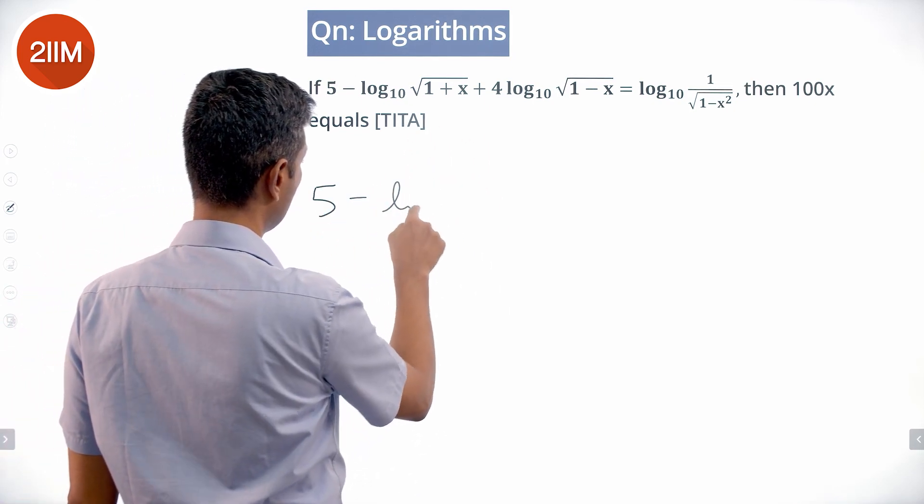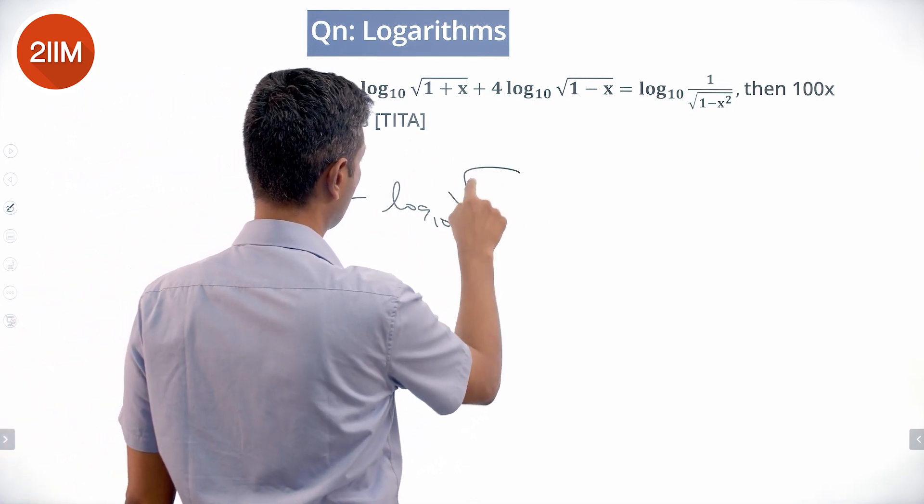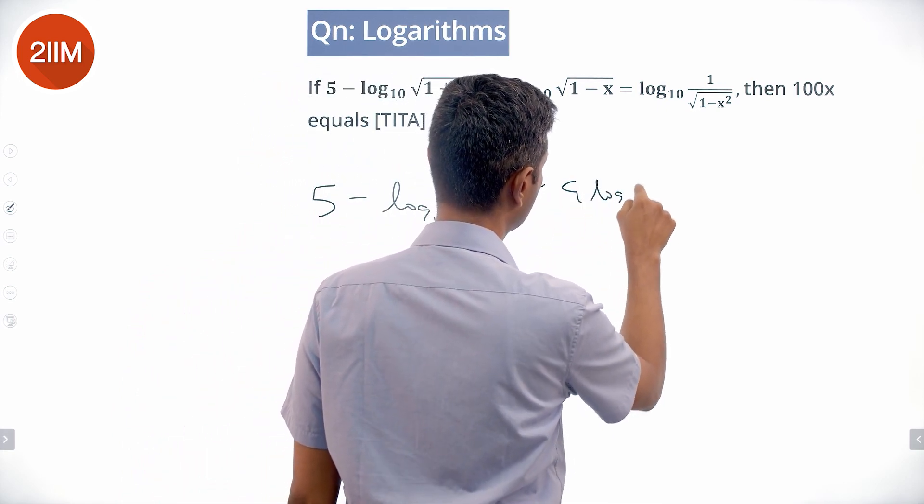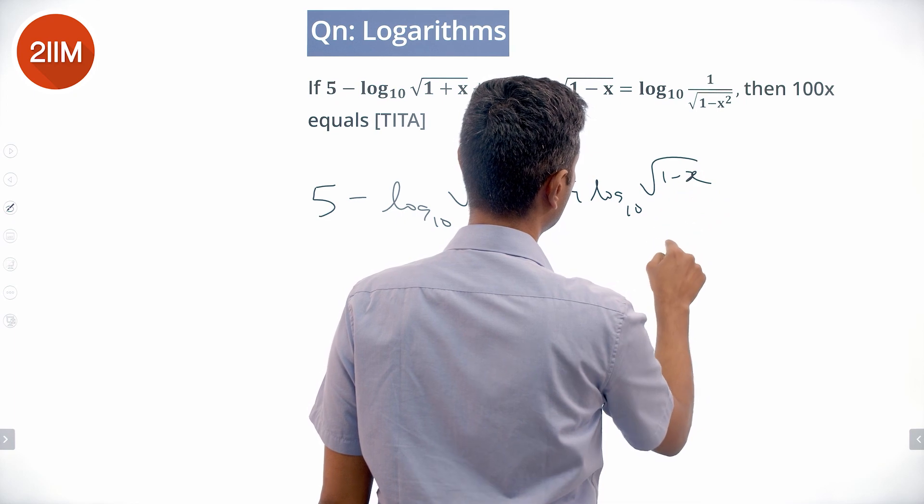So, 5 minus log to the base 10 of square root of 1 plus x plus 4 log to the base 10 of square root of 1 minus x equals...